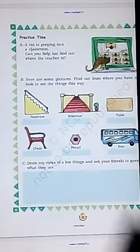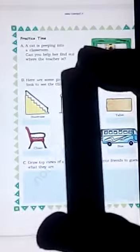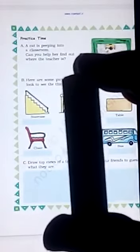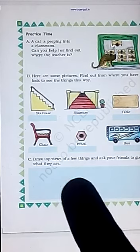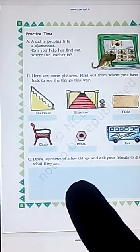In this activity, you have to draw top views and let your friends guess what they are. Let's take an example of this matchbox. I have brought a matchbox for you. Here I'm going to draw this side of my matchbox. Here I have drawn that one. This is the front view of my matchbox.